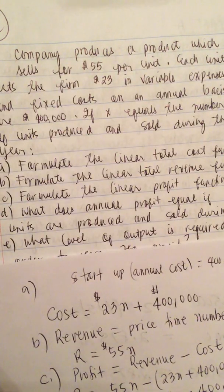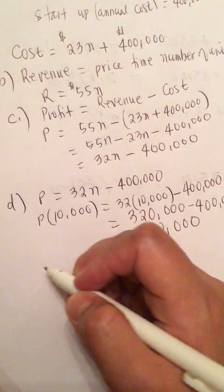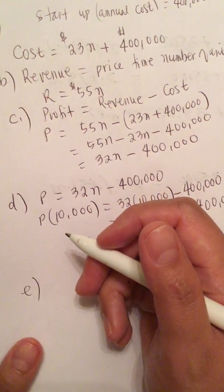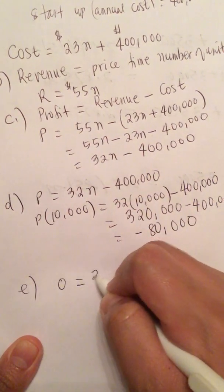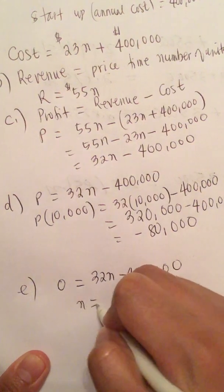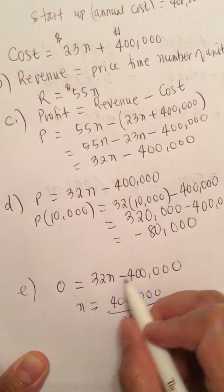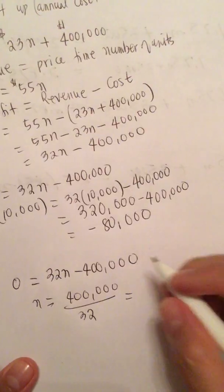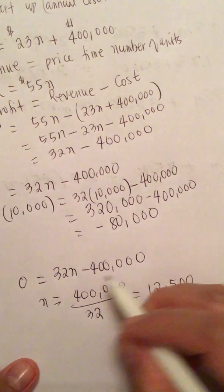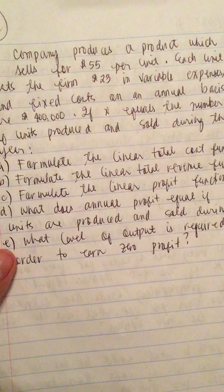And then E, what level of output is required in order to earn zero profit? So this is the break-even point. So 0 equals 32N minus 400,000. So N is equal to 400,000 over 32. So you put this 400,000 on the other side and then solve for N. So this is equal to 12,500. So they need to produce 12,500 to get break-even point. And so that's E. So we did them all.